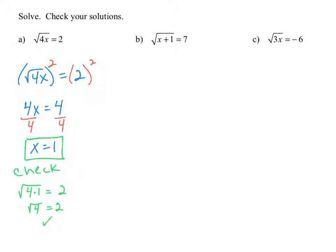Let's do the same process for example b: the square root of the quantity x plus 1 is equal to 7. We can solve this by squaring both sides, as long as the radical is by itself. The square root of x plus 1, that quantity squared — the square power and the square root sign are inverses, so they cancel out. We're left with x plus 1 on the left side and 49 on the right side.